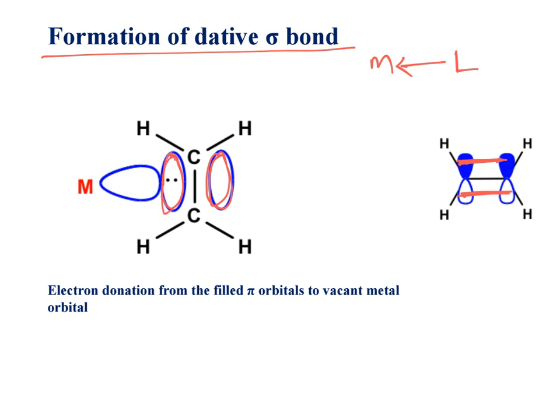Now, these pi electrons are donated to the empty orbital of metal. This is empty orbital.